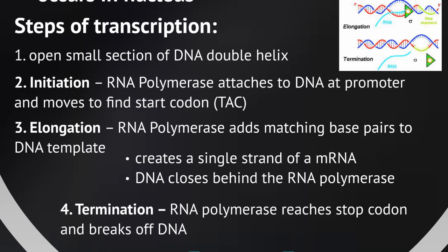The final step is termination — that's when the RNA polymerase reaches a stop codon and breaks off of the DNA. There are three different codons that indicate you've reached the end of a gene.